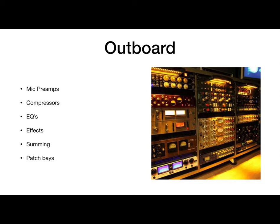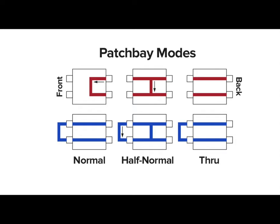Patch bays are essential with outboard gear, or any situation with complex routing. The I/O for each piece of gear is connected to the patch bay. In doing so, you can easily connect cables on the front of the patch bay to route your signal through multiple pieces of gear, as opposed to rewiring racks of gear to achieve the same result. Patch bays have three selectable modes for integrating in-depth signal routing, usually as simple as flipping a switch on the module to toggle through these modes.